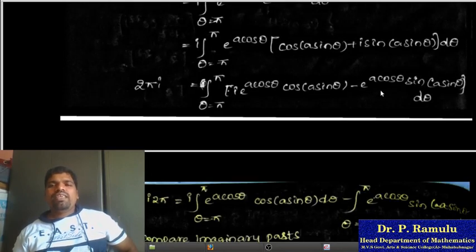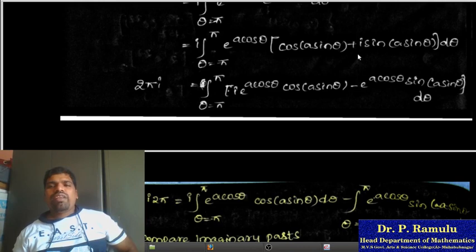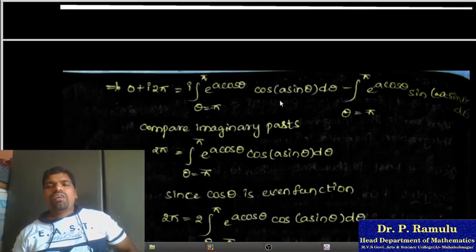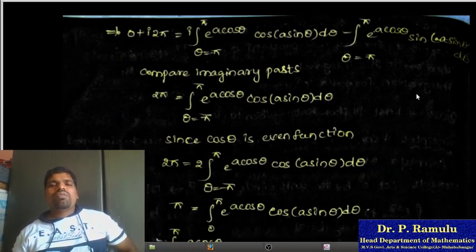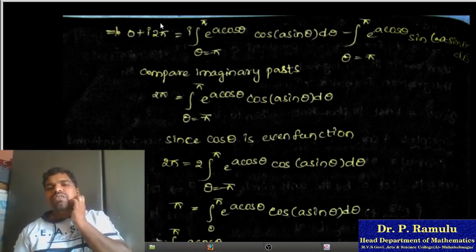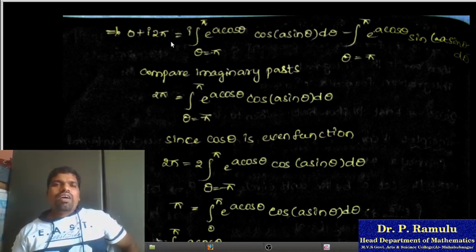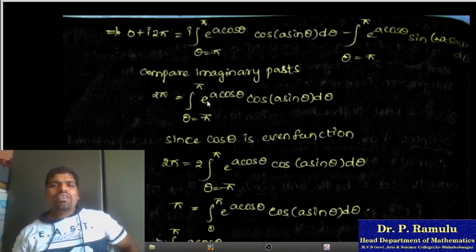We have 2πi equal to this expression. Multiplying through by i, we get i² = -1, so the real and imaginary parts combine. Comparing imaginary parts on both sides: i·2π equals the imaginary part of the right-hand side, which gives 2π = integral from -π to π of e^(a cosθ) cos(a sinθ) dθ.